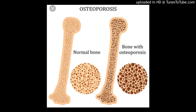Another modality is the DEXA scan — it is the most sensitive and specific imaging modality for diagnosing osteoporosis. Typically, bone density at the lumbar spine and the hip are measured, and the patient's bone mineral density is assigned a score. The T-score is the patient's bone mineral density relative to a young healthy individual. The Z-score is relative to a similar age-matched control. A T-score between minus 1 and minus 2.5 is considered osteopenia; a T-score less than minus 2.5 is considered osteoporosis.